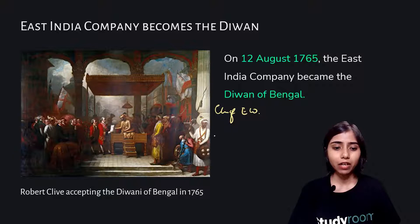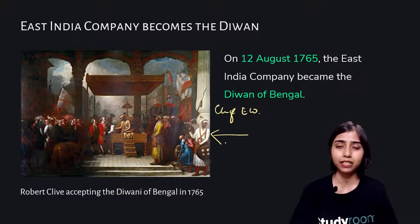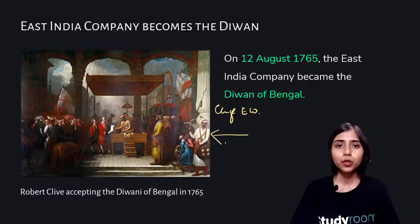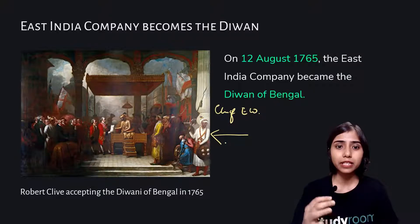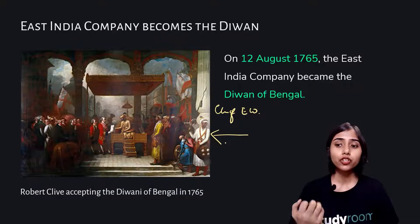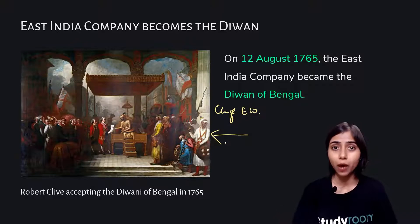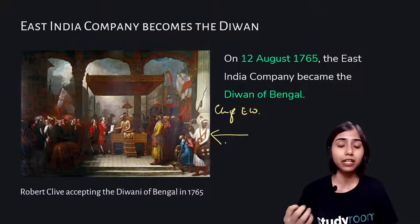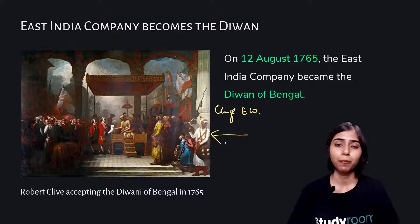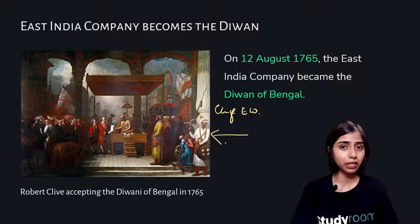This is Robert Clive accepting the Diwani of Bengal in 1765. In your books it is written that he may have accepted this Diwani in his own tent — a very small affair. But the painter has shown it as a very grand affair with many people witnessing. The British always tried to show these events as majestic, portraying Indians as willing to give them power, and presenting themselves as capable leaders taking India on a path of civilization and modernity.